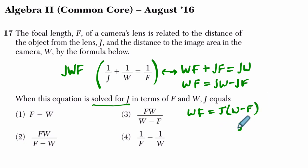And I'm going to get j all by itself. That's what we're solving for. Divide both sides by w minus f. So w, f over w minus f, which is the same thing as choice three.